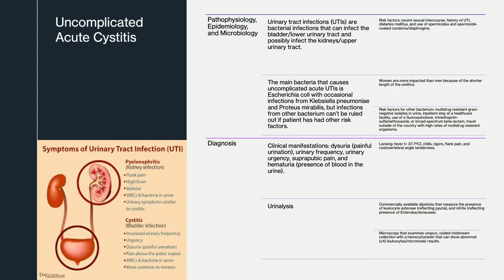It's important to note that women are more affected than men because of the shorter distance between the anus and urethra. Diagnosis is mostly based off of clinical manifestations: dysuria, which is painful urination, urinary frequency, urinary urgency, and the presence of blood in the urine. A urinalysis can also be used to help confirm diagnosis, where we look at leukocytes and nitrites.